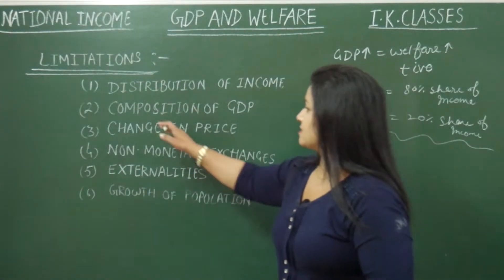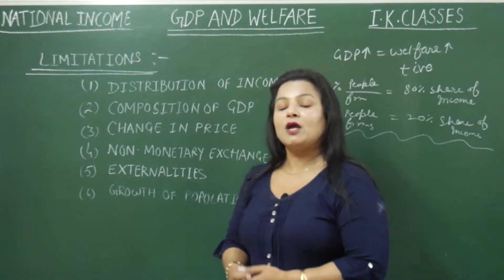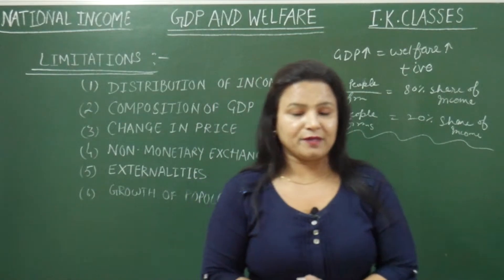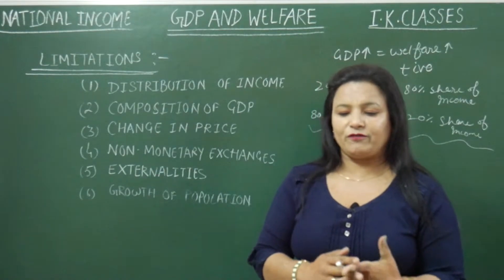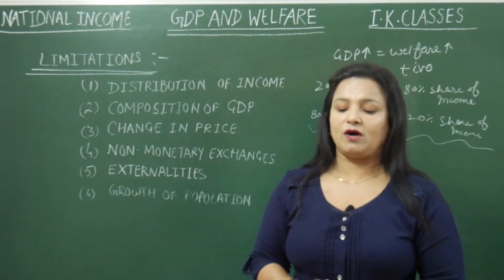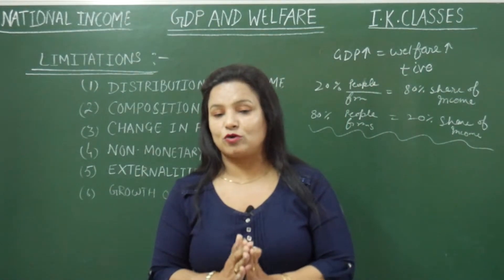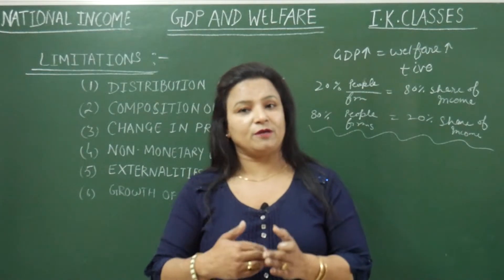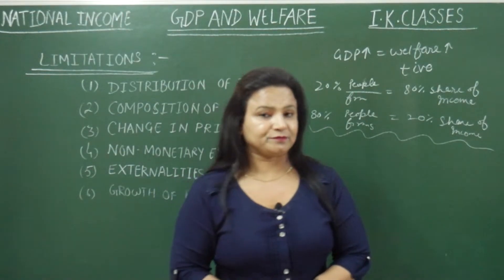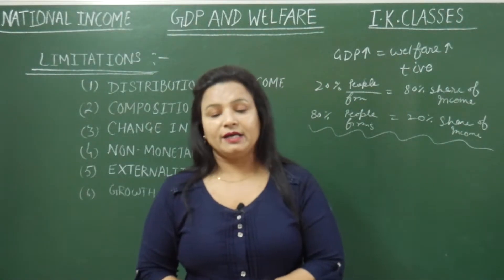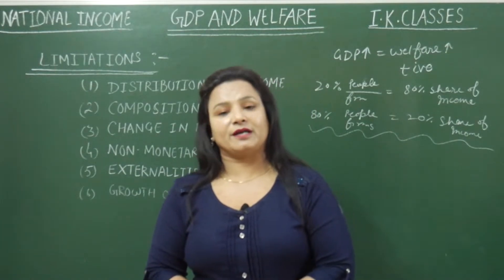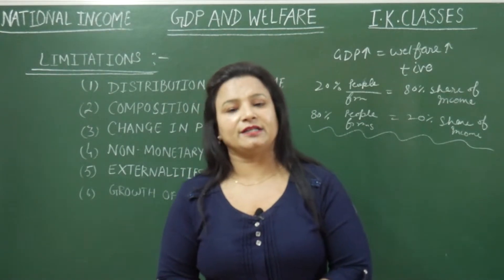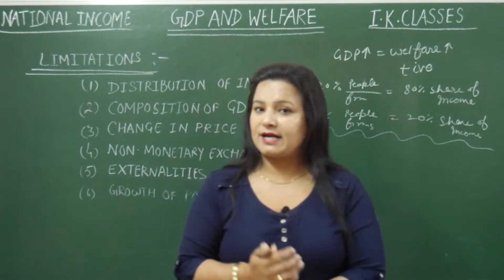The second point is composition of GDP. Composition of GDP means what type of goods are produced. Suppose production of defence goods — production of defence goods does not lead to a direct increase in welfare of the people. If war-time goods or defence goods are produced, the GDP will rise, but the people's welfare will not directly rise. So GDP rise does not necessarily mean welfare rise.